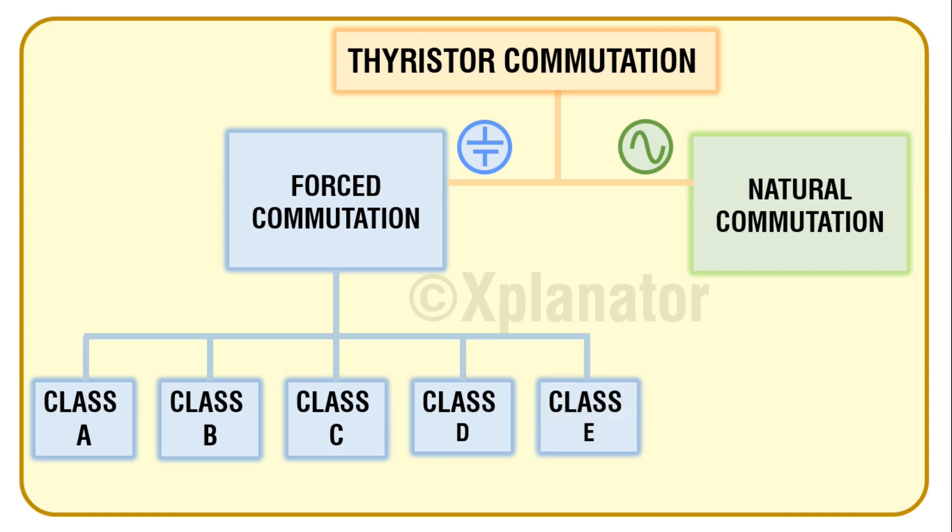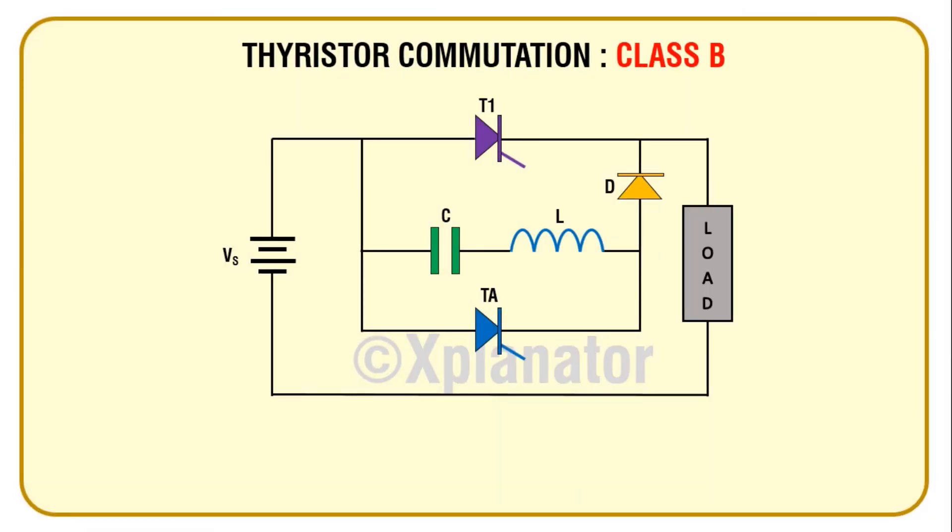We will study Class B circuit for thyristor commutation today. A Class B circuit looks like that in the figure, with a DC supply, series LC circuit, a diode, and two thyristors: T1 and TA. T1 is the working thyristor and TA is the auxiliary thyristor.